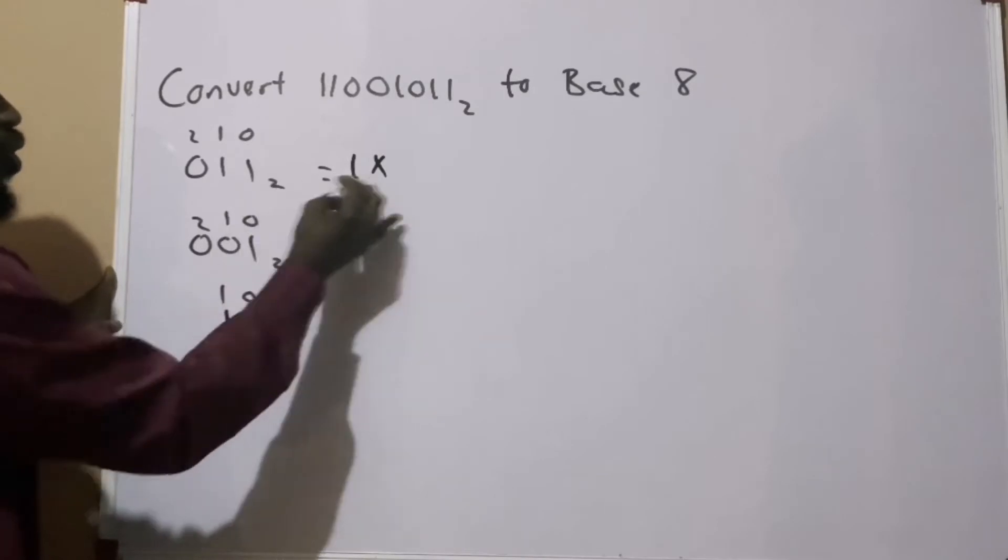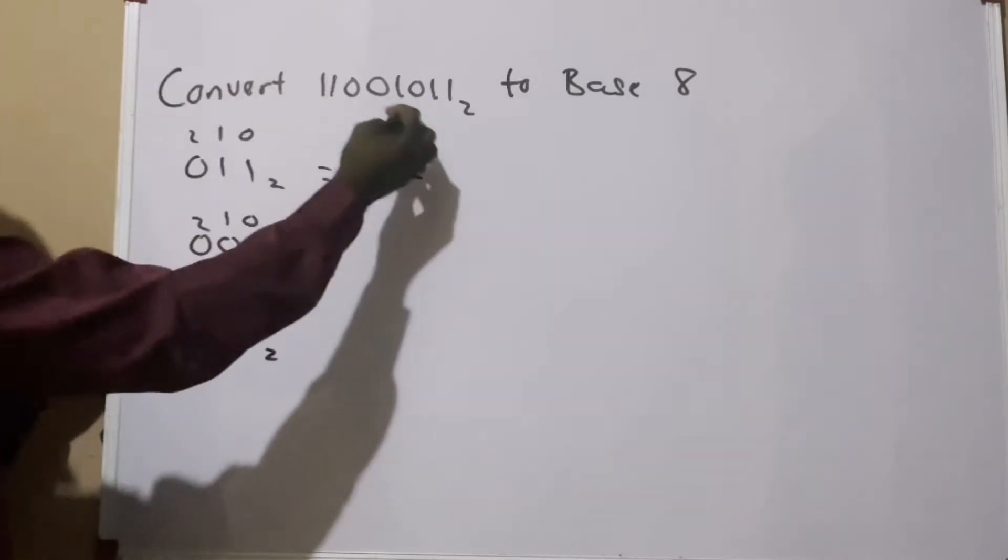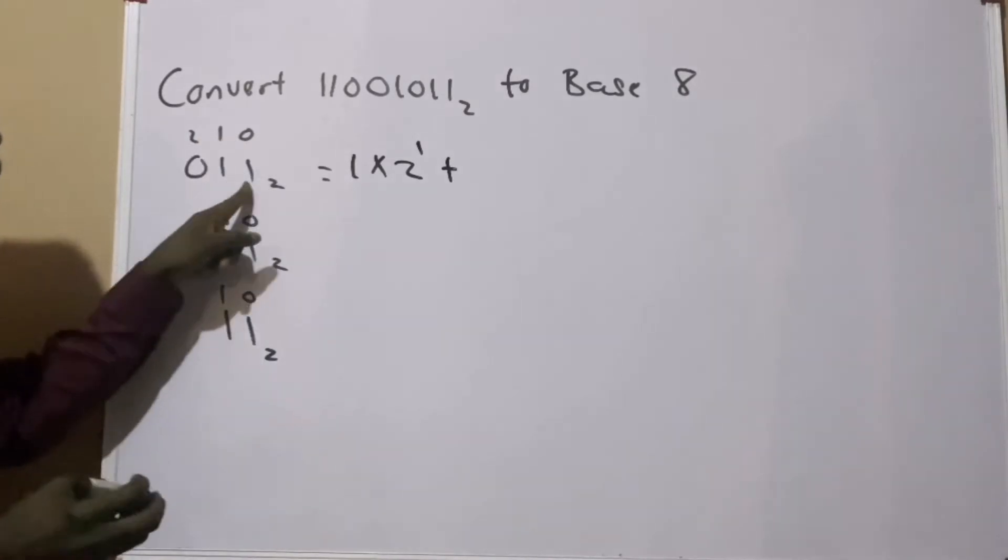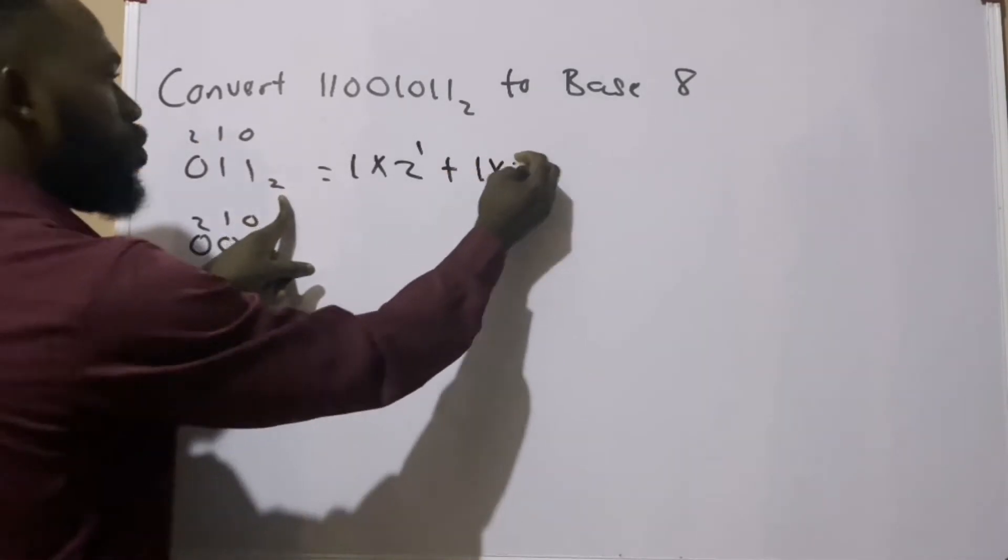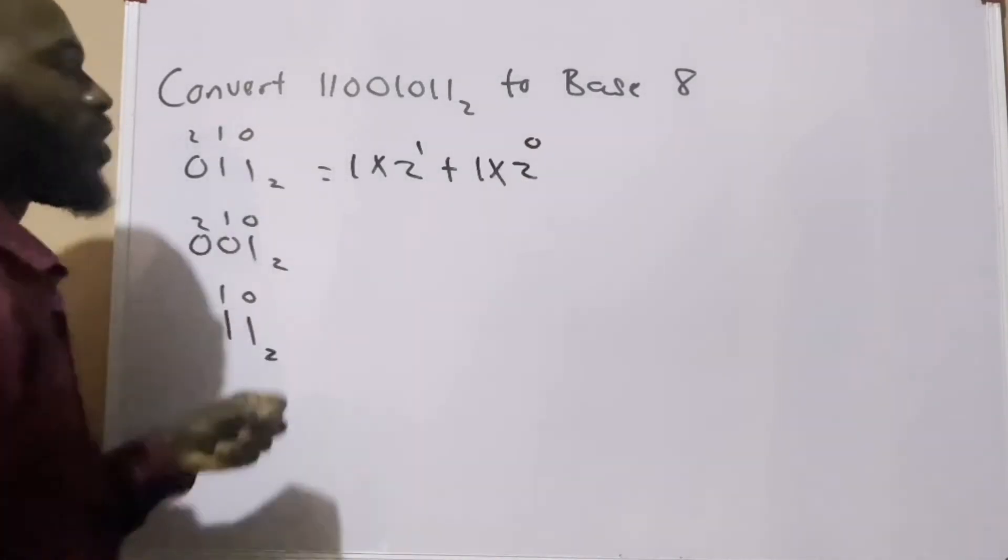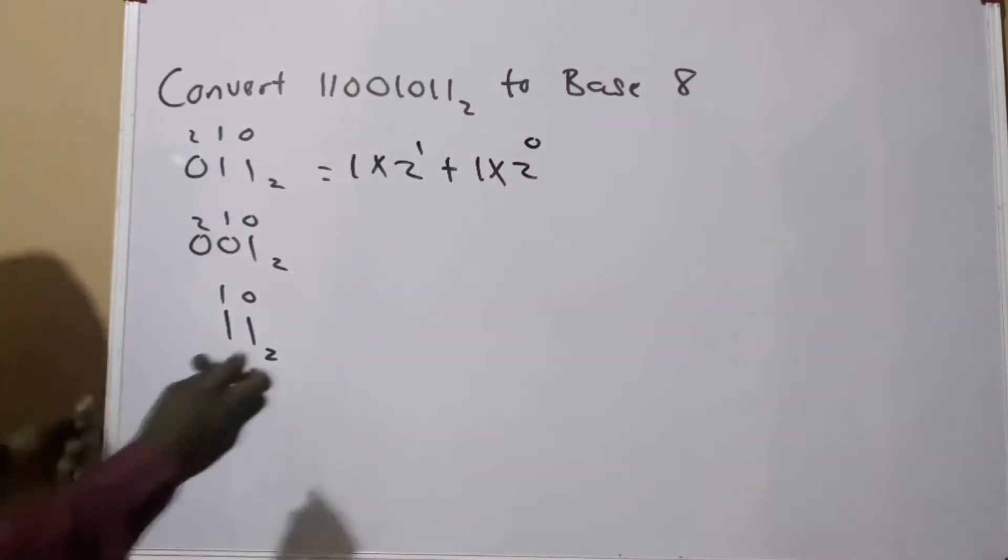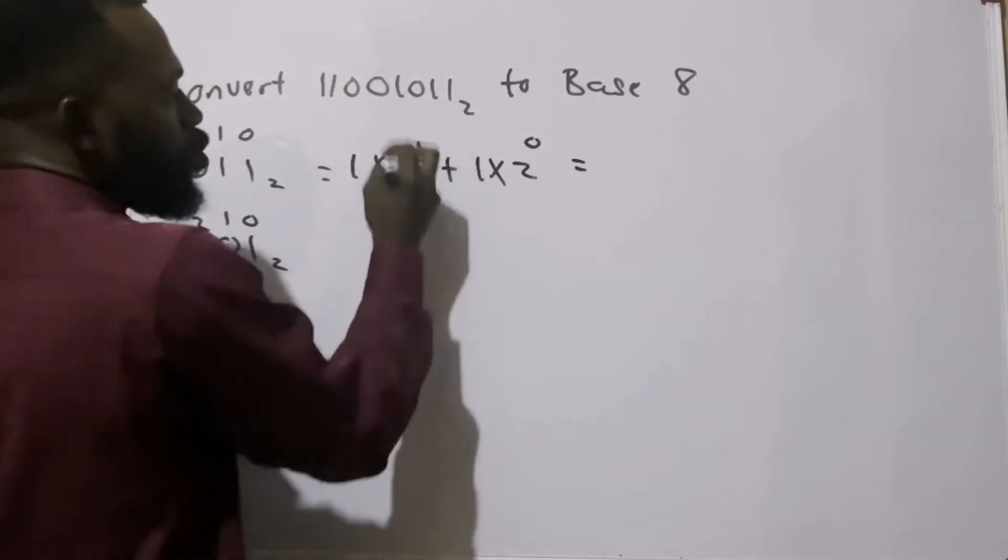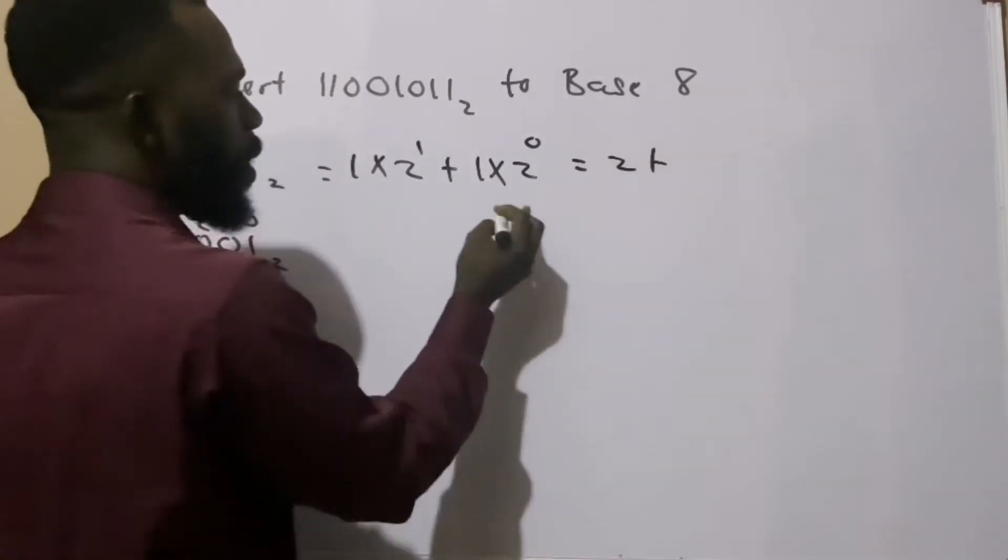Here becomes 1 times the base 2 raised to the power 1, plus 1 times the base 2 raised to the power 0. This will give us 1 times 2¹ is 2, plus 1 times 2⁰ is 1, which equals 3.